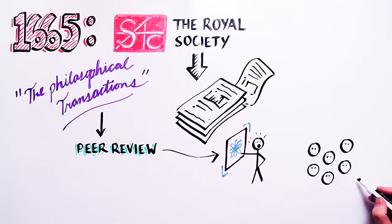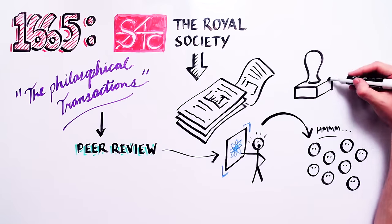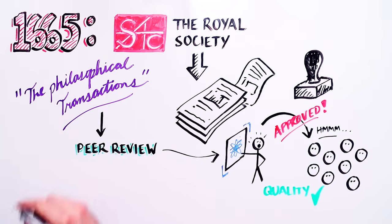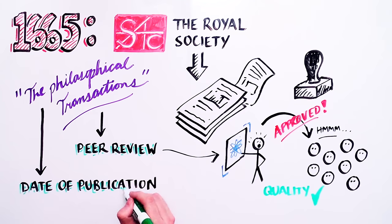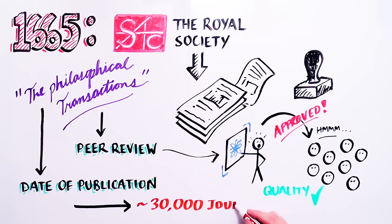This publishing model established the concept of peer review to ensure scientific quality and the defined date of publication to establish priority of discovery. These principles have laid the foundation for the nearly 30,000 scientific journals that exist today.